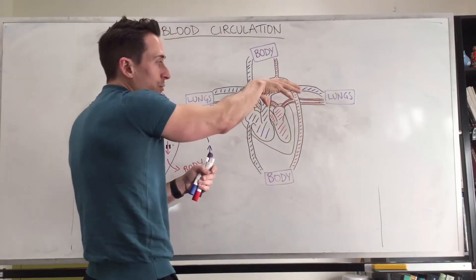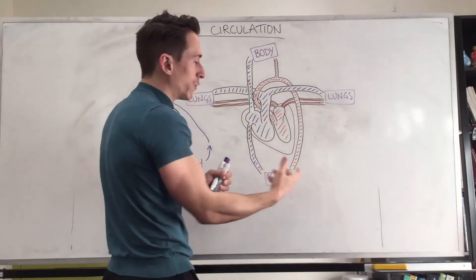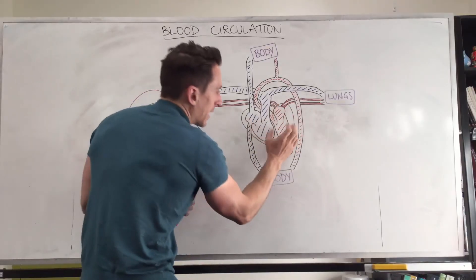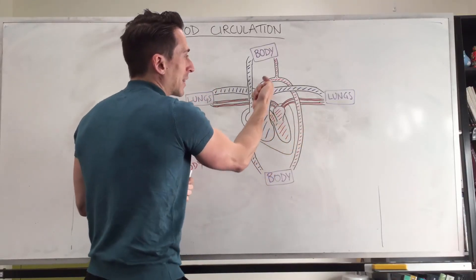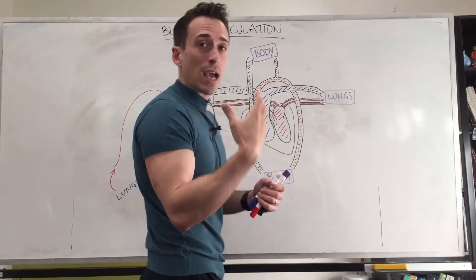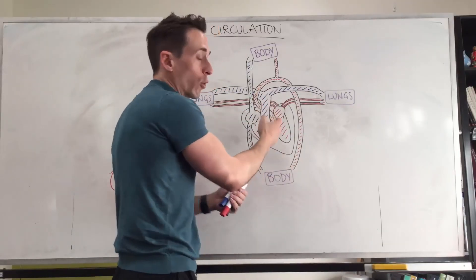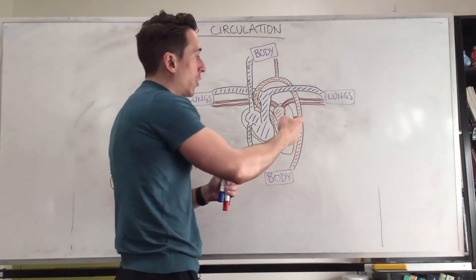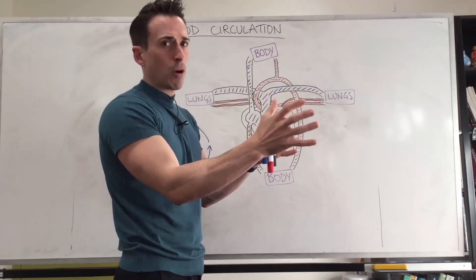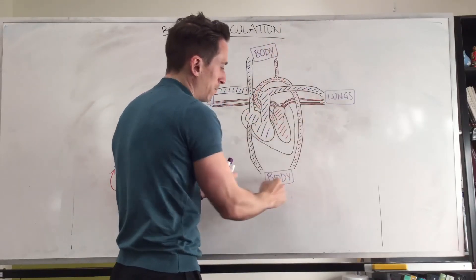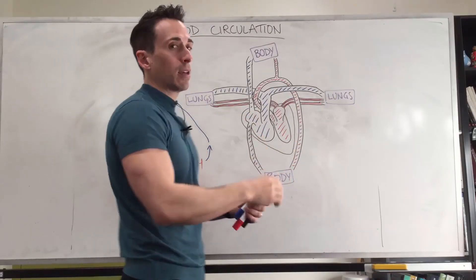The left atrium contracts and the blood goes through the bicuspid or mitral valve to the left ventricle, which contracts and pushes blood up through an artery called the aorta. There's another semilunar valve here called the aortic semilunar valve. The aorta then has multiple branches that deliver oxygenated blood to the body, and once it's deoxygenated it comes back.